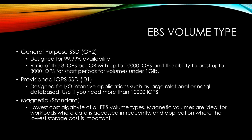There are types of EBS: General Purpose SSD, Provisional IOPS SSD, and Magnetic Standard, with more types added in the latest UI. General Purpose SSD is designed for 99.99% availability with 3 IOPS per gigabyte, up to 10,000 IOPS, and the ability to burst up to 3,000 IOPS for short periods for volumes under 1 gigabyte.